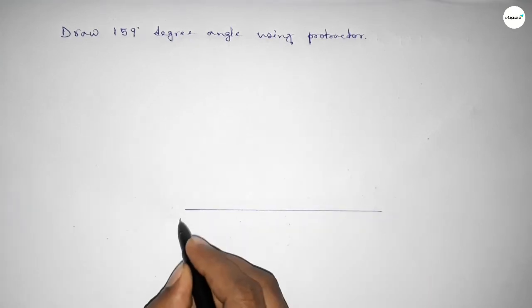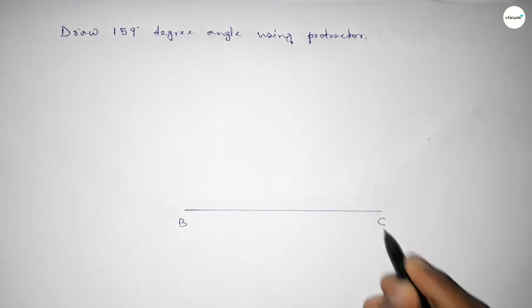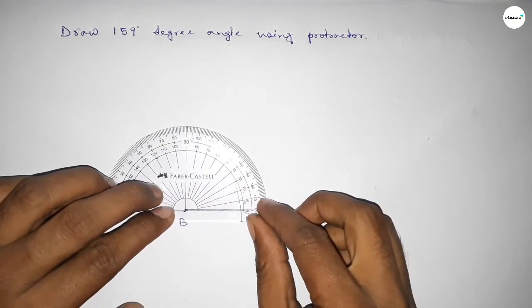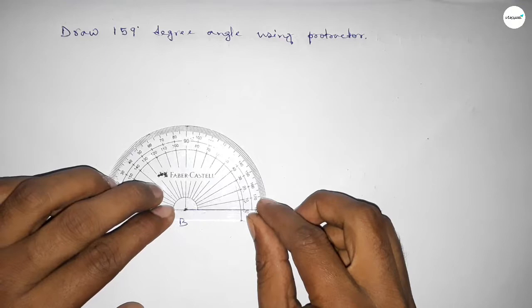Taking here point B and here C. Now putting the protractor on the point B perfectly, then counting the angles.